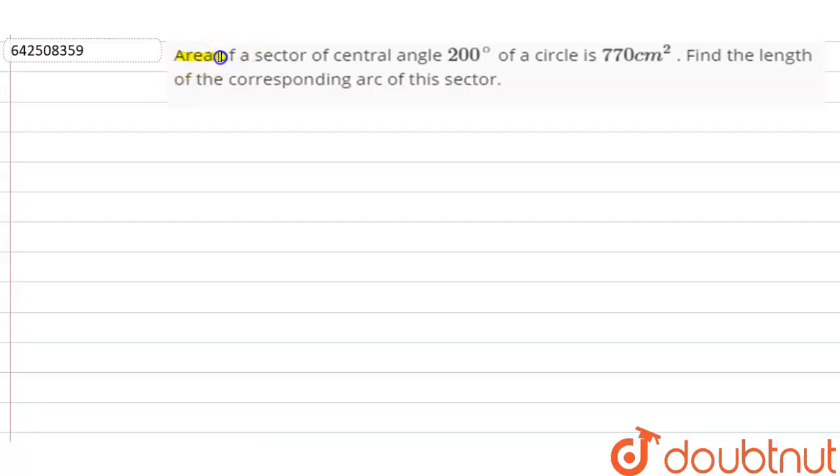Area of a sector of central angle 200 degrees of a circle is 770 centimeter square. Find the length of the corresponding arc of the sector.